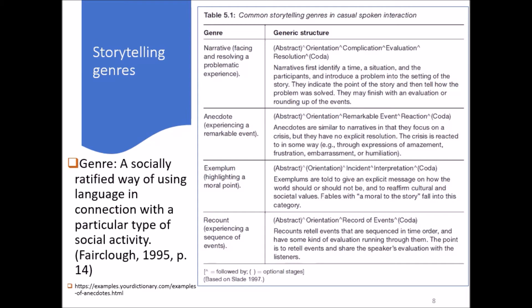They basically refer to some common storytelling genres in casual spoken interactions. As this chart shows, which is based on Slate 1997, there are four types of common storytelling genres. But actually there are more than these. In the next slide I will elaborate more on them.